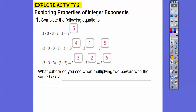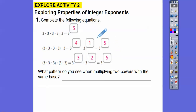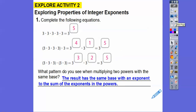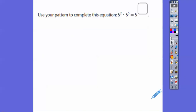Notice the bases don't change — they stay the same. They're all base 3. So don't make the mistake of multiplying 3 times 3 is 9. We're just looking at the exponents. The pattern: 4 plus 1 is 5, 3 plus 2 is 5. So we add the exponents. The result has the same base, with an exponent equal to the sum of the original exponents. Using that pattern: 5 squared times 5 to the 5th equals 5 to the 7th, because 2 plus 5 is 7.